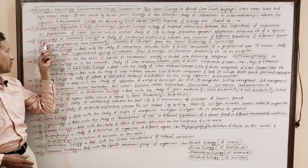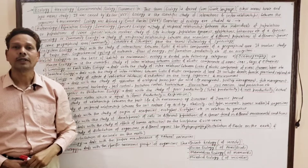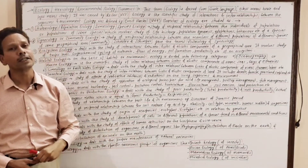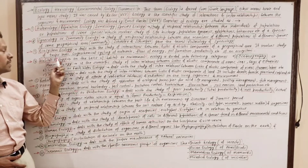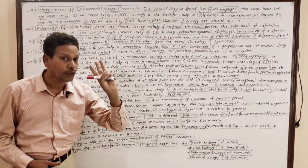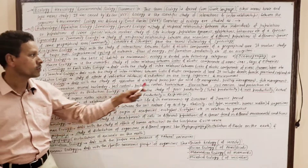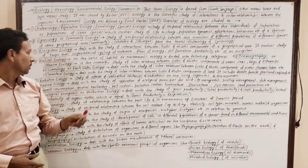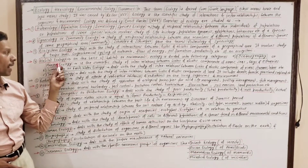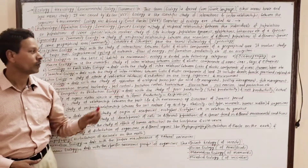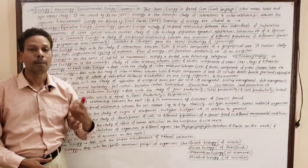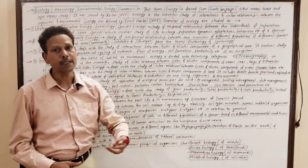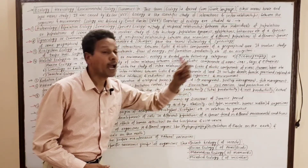The next branch is habitat ecology. Habitat means the living area or living place of organisms. Habitat ecology is categorized into three branches. The first is oceanography, which means marine ecology. Marine ecology deals with the interrelations between biotic and abiotic components of oceans, seas, bays, and estuaries.